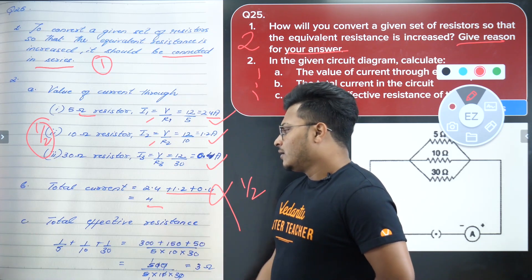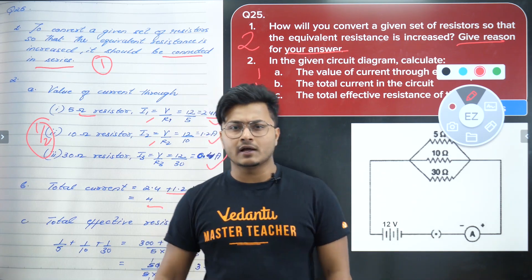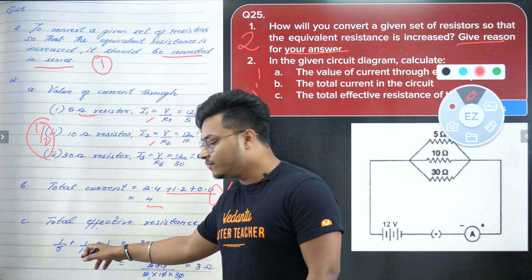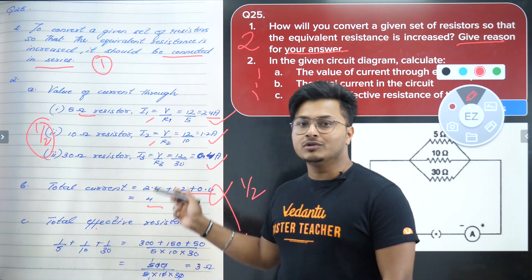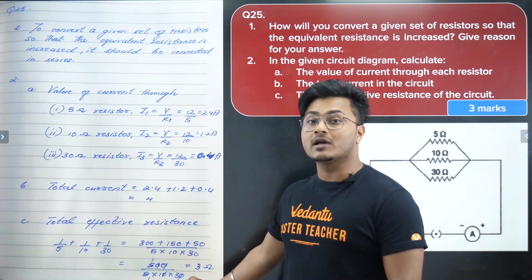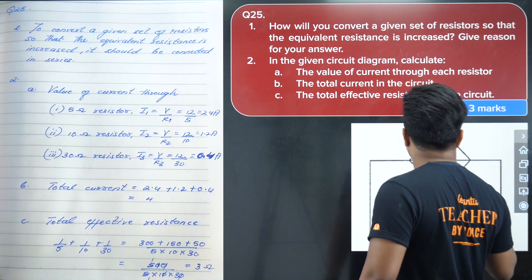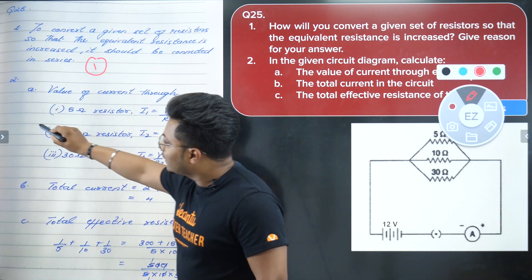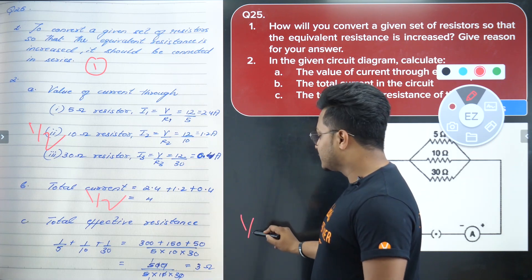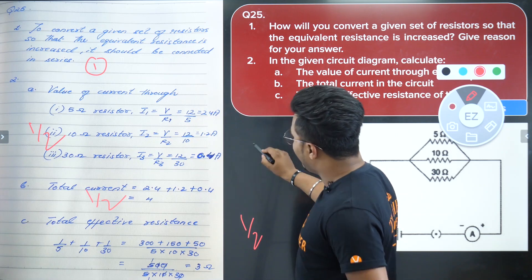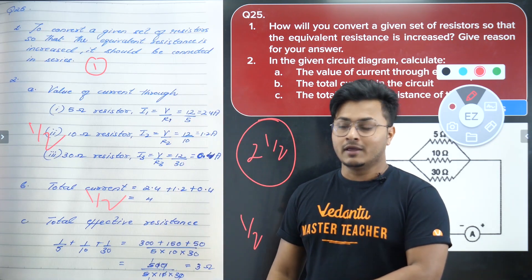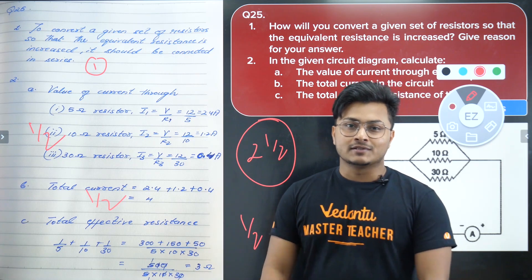For the total effective resistance, the student writes 1/R = 1/5 + 1/10 + 1/30, which shows a parallel connection. But the formula for parallel resistance — 1/R_total = 1/R1 + 1/R2 + 1/R3 — is not written. No formula written means half marks only. From this 5-mark question, the student is getting only 1 to 2.5 marks — and these are silly mistakes. This is exactly why self-assessment is so important.